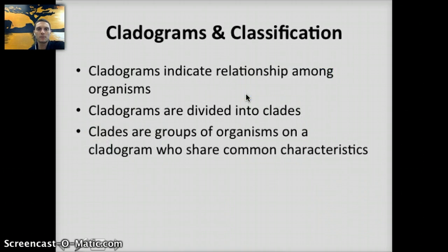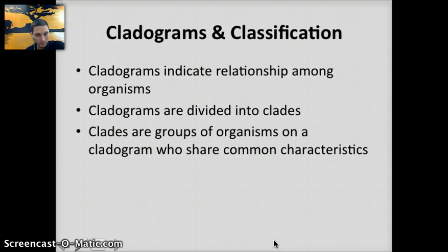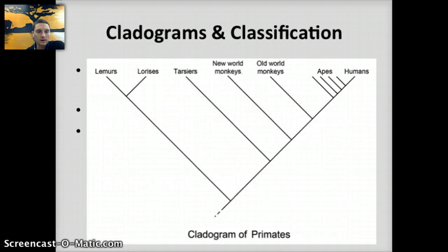Cladograms indicate the relationships among organisms and are divided into clades — groups of organisms that share common characteristics. They are tree-like diagrams showing the most probable sequence of divergence. In the past, they were based on structural characteristics, but now they are almost exclusively based on amino acid sequence examination. In a primate cladogram, the closest relatives of humans are chimps and bonobos, with DNA evidence suggesting the split occurred about 4.5 million years ago.